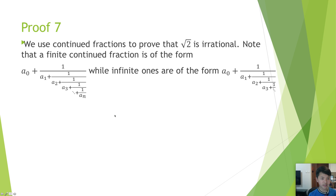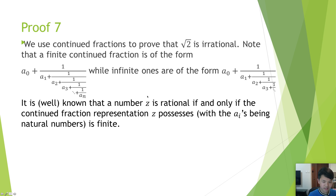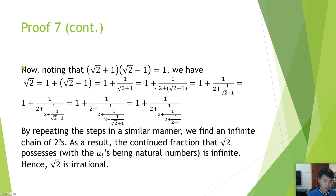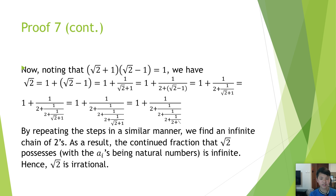Proof 7. We use continued fractions to prove that the square root of 2 is irrational. Note that a finite continued fraction is of this form, while infinite ones are of this form. It is well known that a number z is rational if and only if its continued fraction representation, with the a_i's being non-negative integers, is finite. Now, note that the square root of 2 is equal to this expression. By repeating the steps in a similar manner, we find an infinite continued fraction. As a result, the continued fraction that the square root of 2 possesses is infinite. Hence, the square root of 2 is irrational.